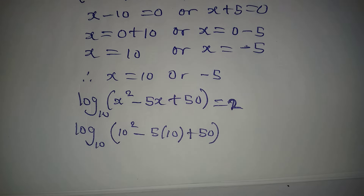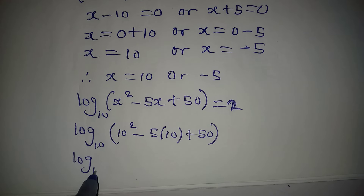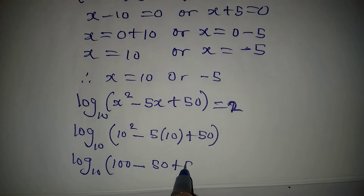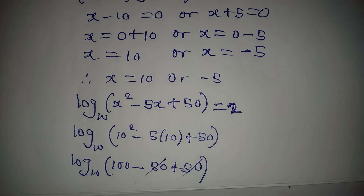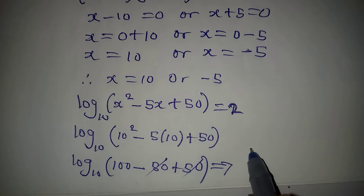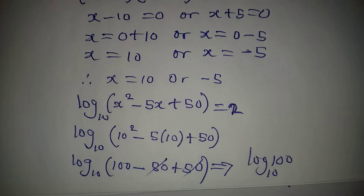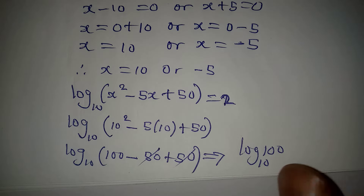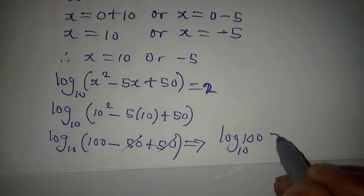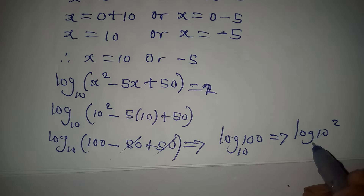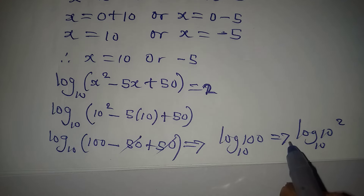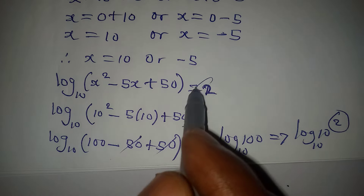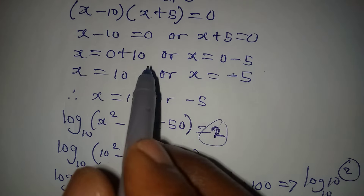We have log base 10 of (100 - 50 + 50). The -50 and +50 cancel, leaving log base 10 of 100. That is log base 10 of 10², and the power comes down to give 2·log₁₀(10) = 2. So x = 10 is confirmed correct.